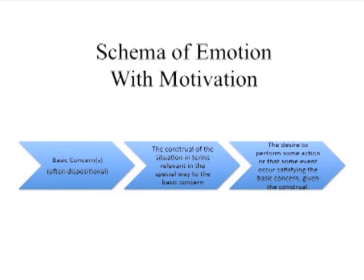If somebody tells me he's angry, I know the kind of way he's seeing the situation — and it's different from envy, from jealousy, from hope, and so forth. Here's a basic schema for an emotion that has motivation. You come into the situation with a concern — it might be an active, occurrent concern, or it might be a completely dispositional concern. You might not be thinking about anything related to what you're going to encounter. Then you go into the situation, and because you have this dispositional concern, it is triggered by the way you see the situation.